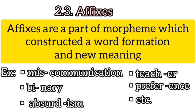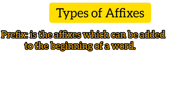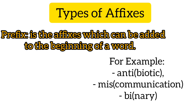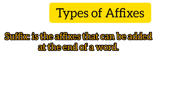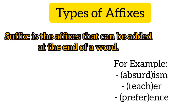Affixes are a part of morpheme which construct word formation and new meaning — for example, 'miscommunication,' 'binary,' 'absurdism,' 'teacher,' 'preference,' etc. There are two types of affixes. The first is prefix: affixes added to the beginning of a word — for example, 'antibiotic,' 'miscommunication,' and 'binary.' The second type is suffix: affixes added at the end of a word — for example, 'absurdism,' 'teacher,' 'preference,' etc.